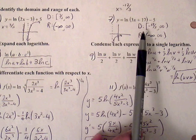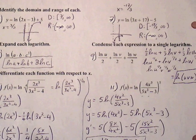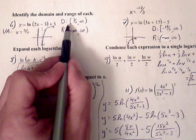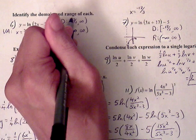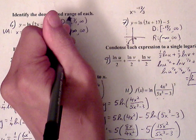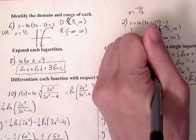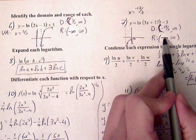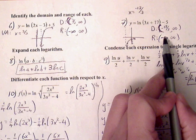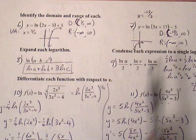The domain for number seven will be from negative 17 over 3 to positive infinity. I made a mistake earlier — the three-halves is at the asymptote, so we should have parentheses there, not a bracket. Same thing with number seven: parentheses at negative 17 over 3. And again, the range is all real numbers.